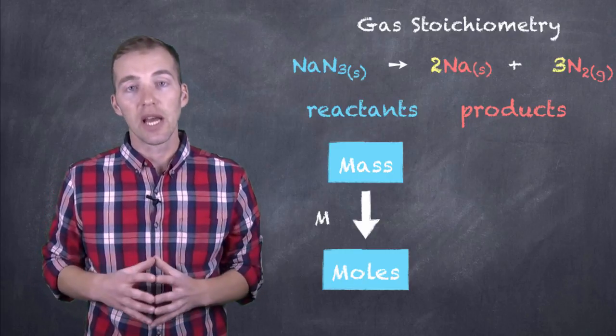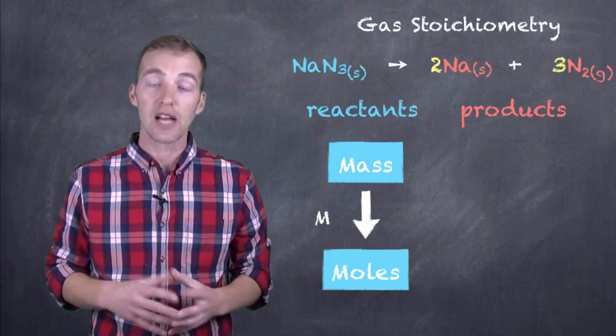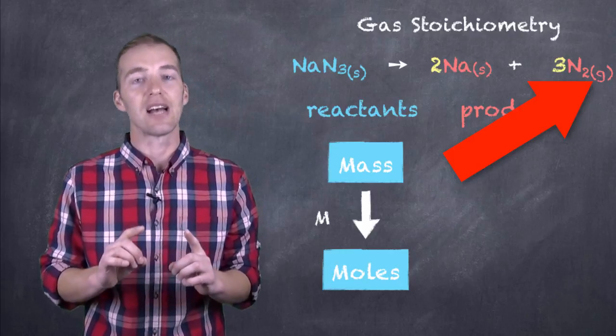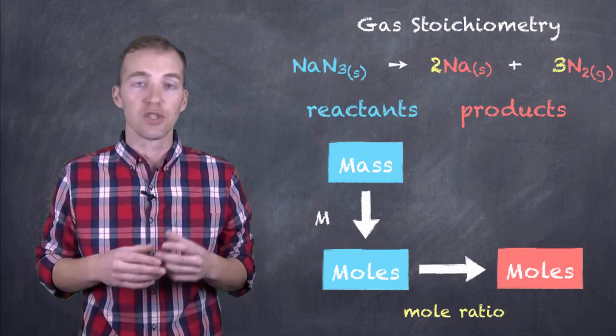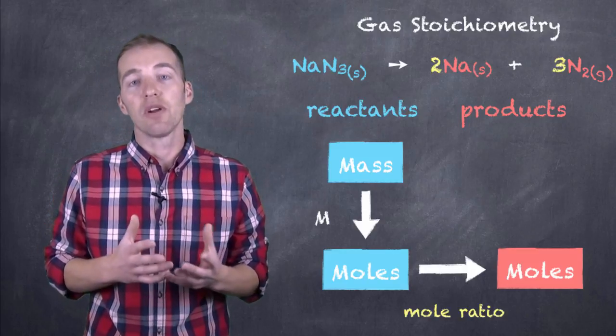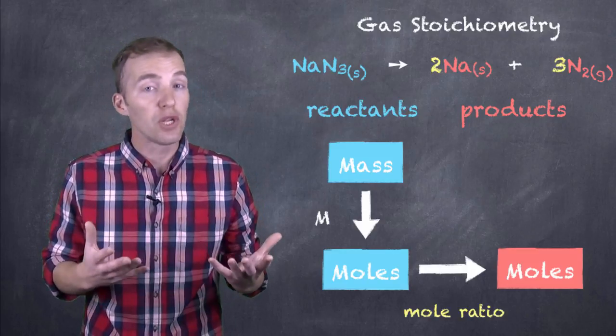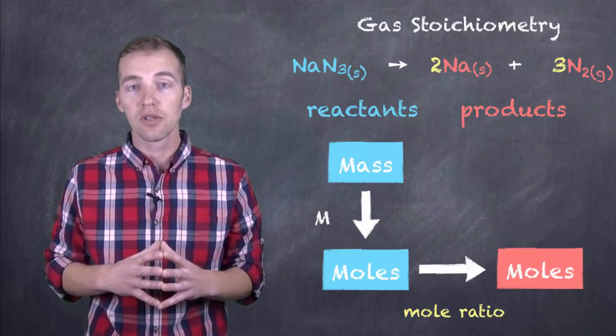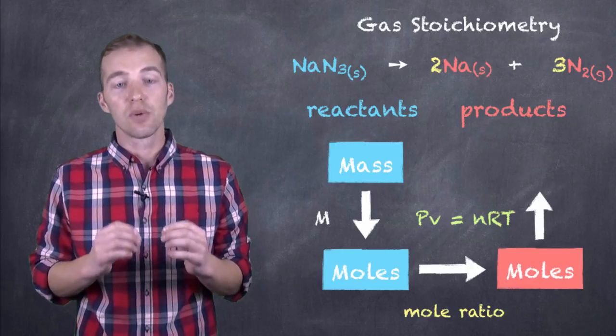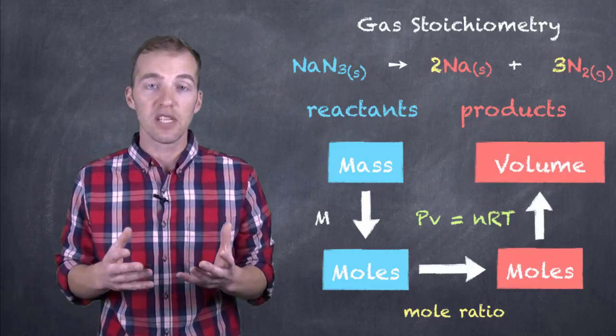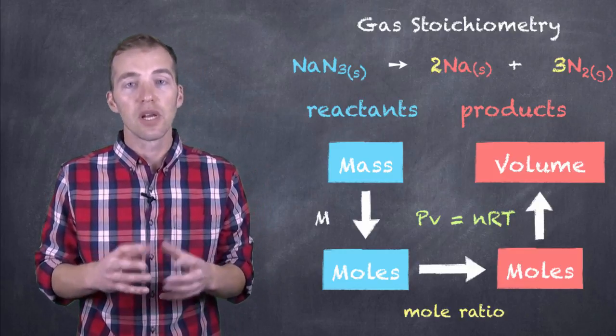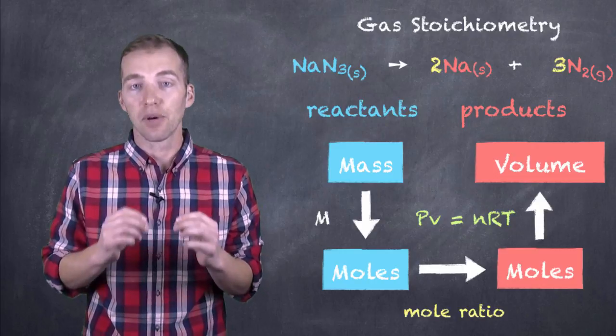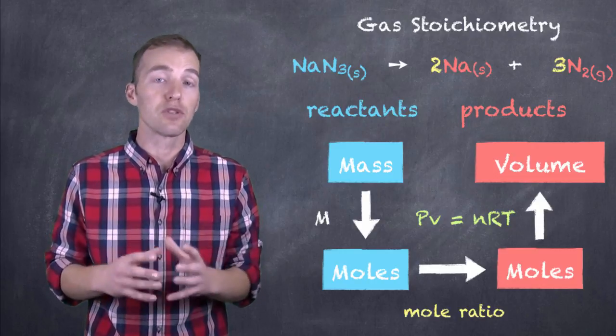And you can see here that we get two products in this decomposition reaction, but notice that one of them is a gas. So as we go through our mole ratio, our mole conversion from our moles of reactant to our moles of product, and now we want to figure out the amount, let's say the volume of gas that's going to be produced, we can now use this relationship of PV equals nRT or n equals PV over RT to figure out the volume of that particular gas that's going to be produced.